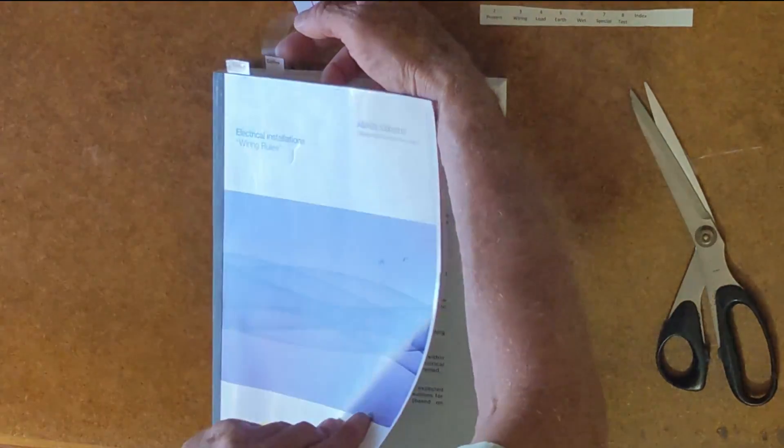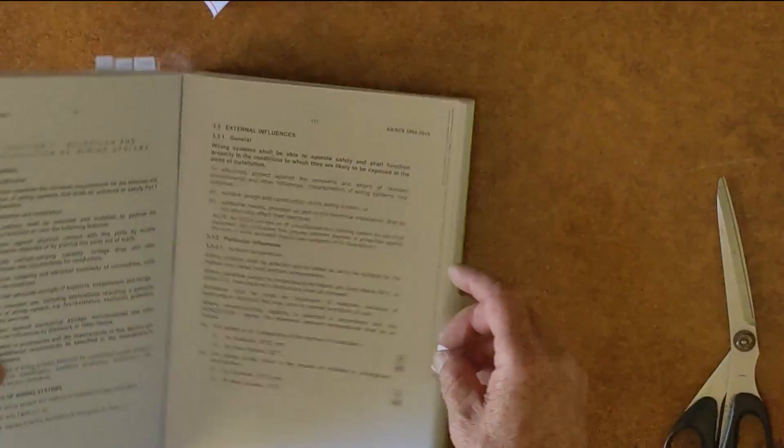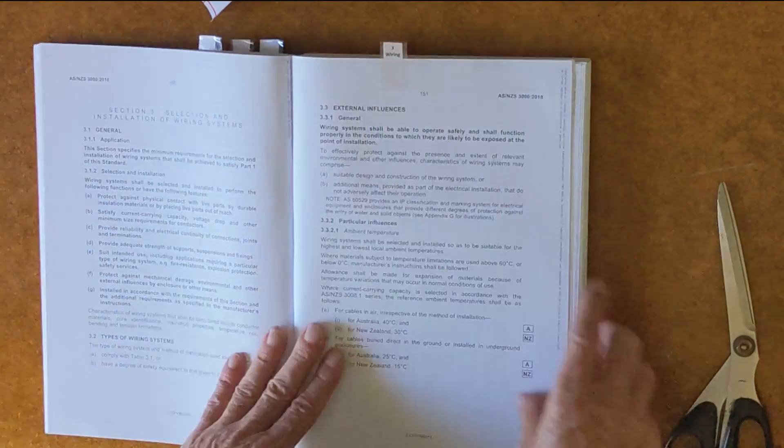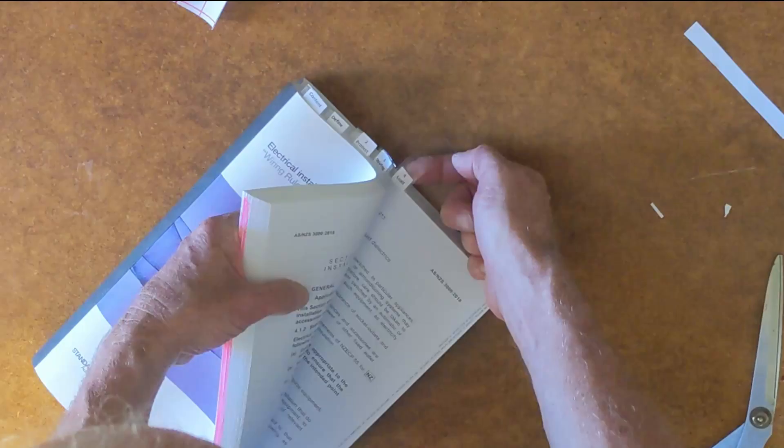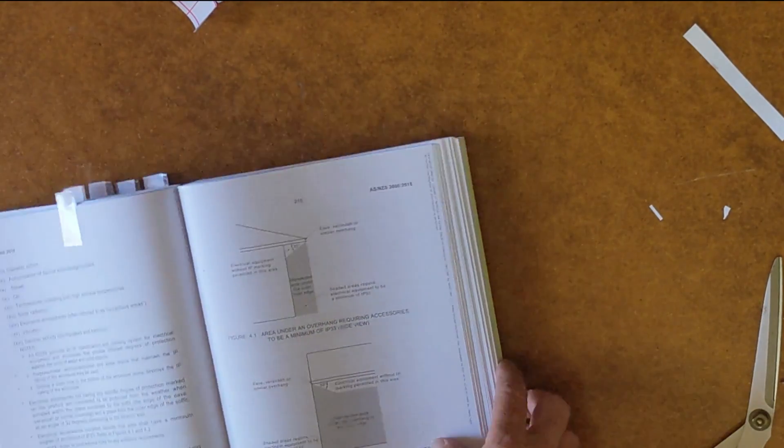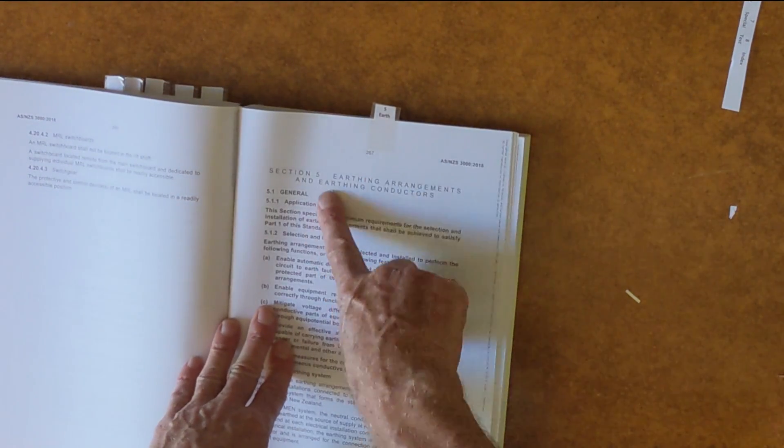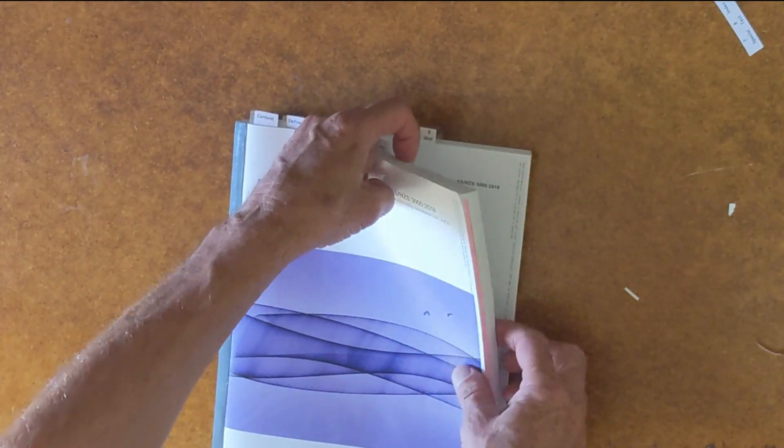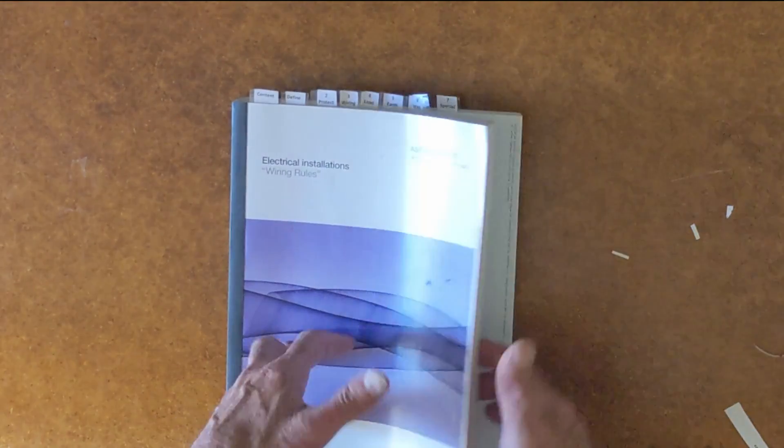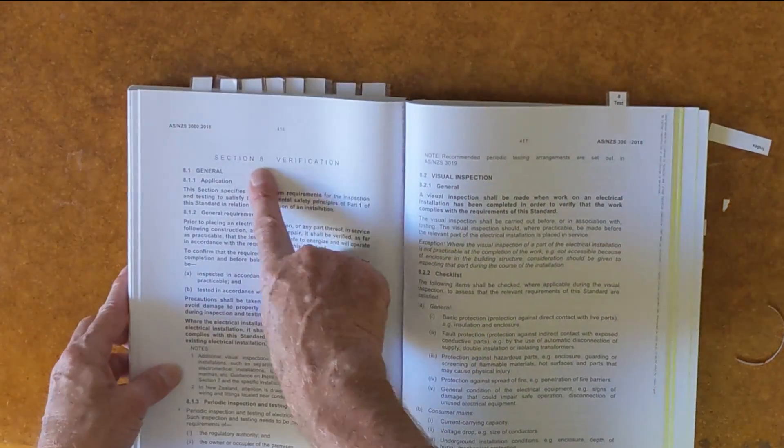I know that I'm going to be asked questions on definitions. Section 2 is protection. Section 3 is wiring systems. Section 4 is installation of equipment or loads. Section 5 is earthing. Section 6 is damp situations or wet areas.